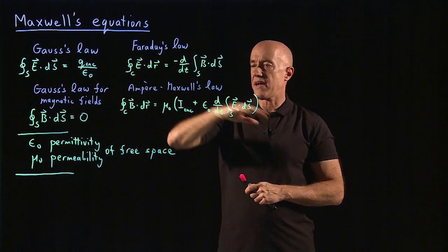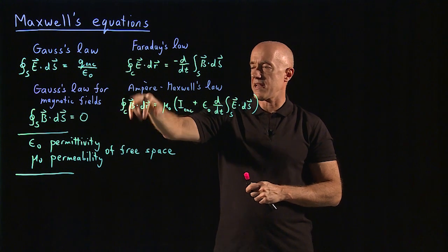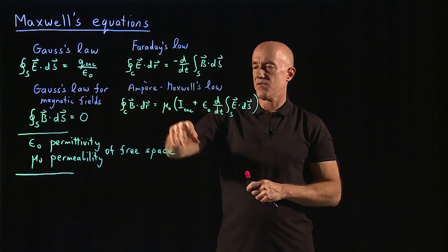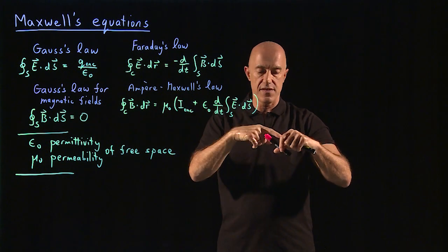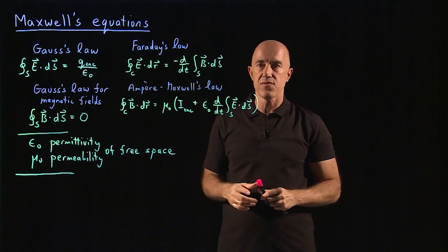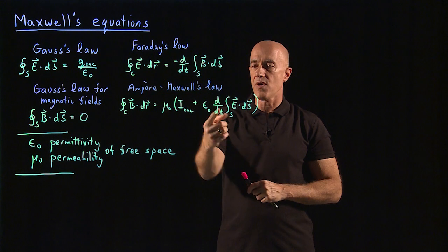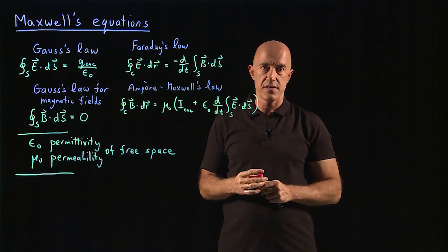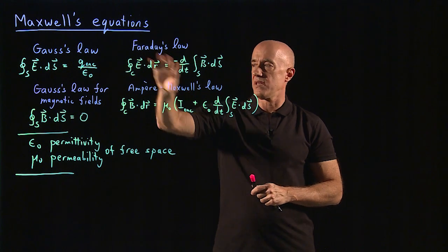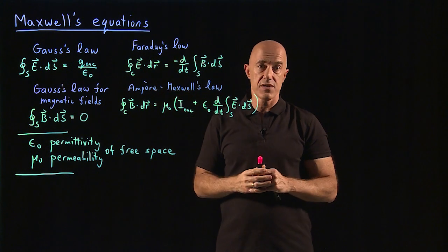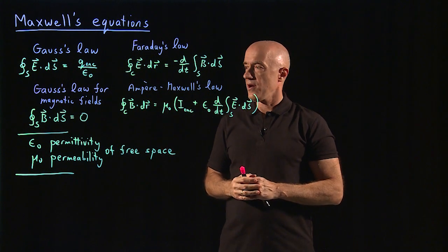Then we have Ampere-Maxwell's law, which gives you the integral of the magnetic field around a closed curve, equal to the constant mu nought times the current that passes through the closed curve. That's Ampere's form of the law. And then Maxwell added a very important second term that enabled Maxwell's equations to predict electromagnetic waves.